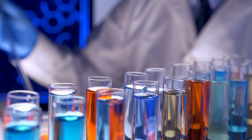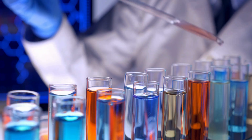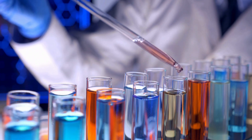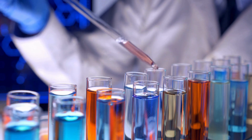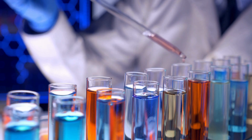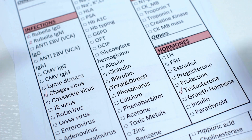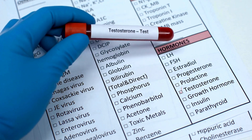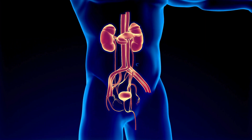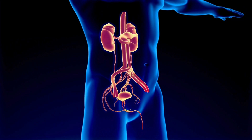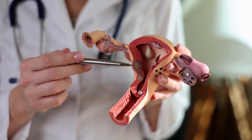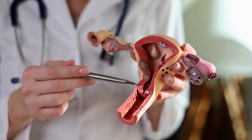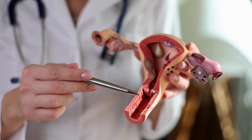Chemical toxicity: microplastics often contain harmful additives like phthalates, bisphenol A (BPA), and flame retardants, which can leach into the body and disrupt hormonal systems. Endocrine disruption: these chemicals are linked to reproductive issues, developmental problems, and increased cancer risk.